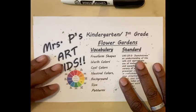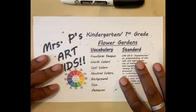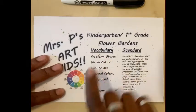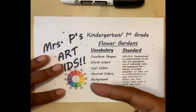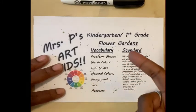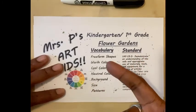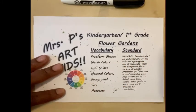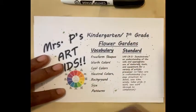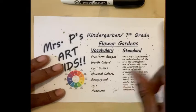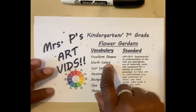Alright, my kindergarten and first grade artists, before we begin the artwork we have to go over a few vocabulary words. First, like I said in the intro, we're going to be using freeform shapes — those are shapes that are uneven, also called organic shapes or natural shapes. Human beings are freeform shapes, animals are freeform shapes, plants and trees, clouds — all freeform shapes.